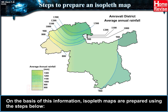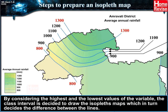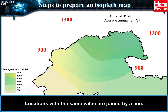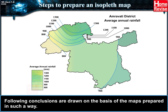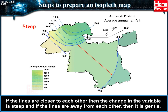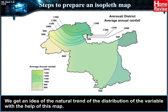Steps to prepare an isopleth map: considering the highest and lowest values of the variable, the class interval is decided, which determines the difference between the lines. Lines are drawn for the decided intervals, joining locations with the same value by a line. If the lines are closer to each other, the change in the variable is steep; if the lines are farther apart, the change is gentle.